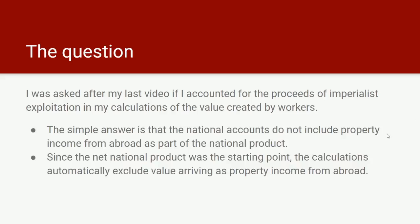The simple answer is that the national accounts don't include property income from abroad as part of the national product. Since I use the net national product as the starting point of my calculations, this automatically excludes value arriving from property income abroad. That's the simple answer.